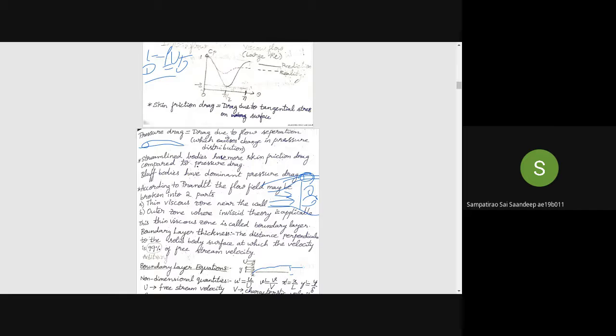This is our viscous zone, and outside this viscous zone, our inviscid theory is applicable—it's more accurate. So this thin viscous zone is called the boundary layer.